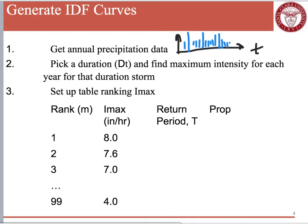For example, maybe this 8 inches per hour happened in 1997 — a very wet year. Then maybe 7.6 inches per hour for a 24-hour storm happened in 1937. The actual years don't matter — it's just ranking. And maybe this last one happened in 2015, which was a very dry year.